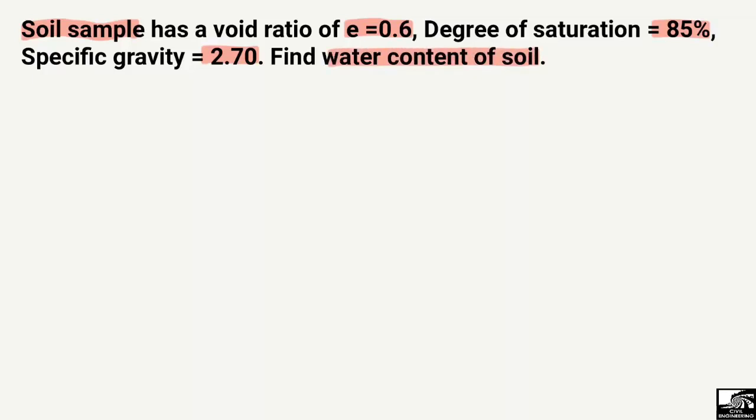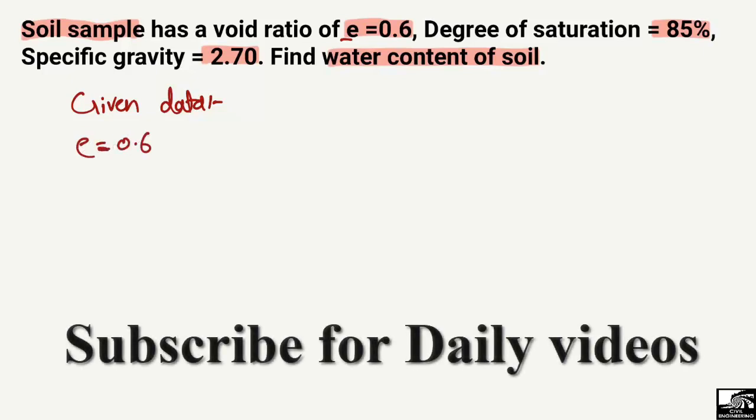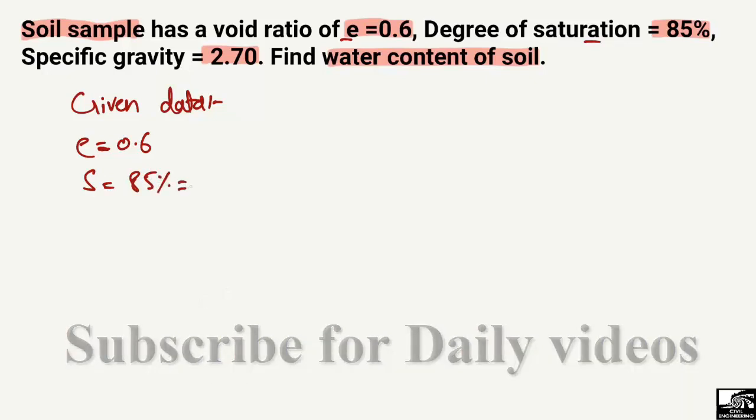This is a very simple problem with some given data. For the soil sample, we know the void ratio, which is e = 0.6, and then the degree of saturation of the soil sample, which is 85%, represented by S and equal to 85%.